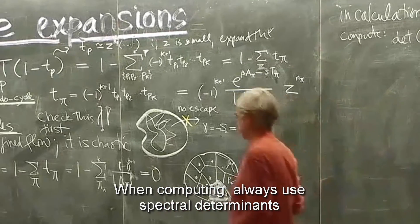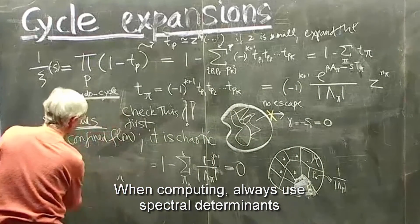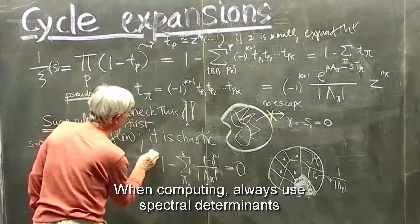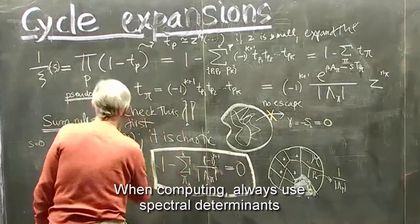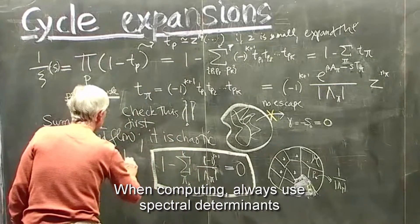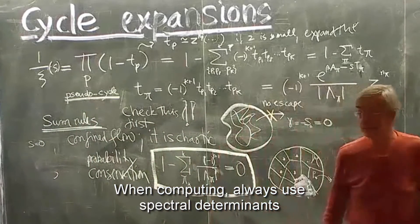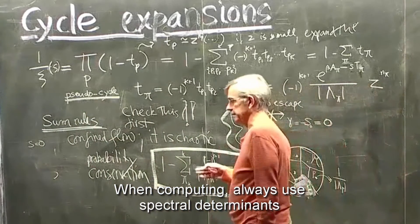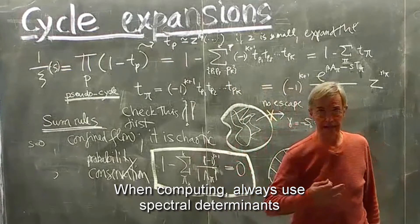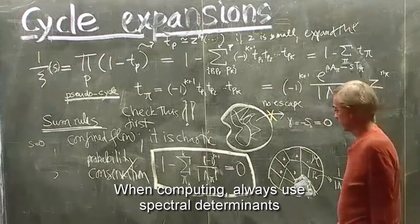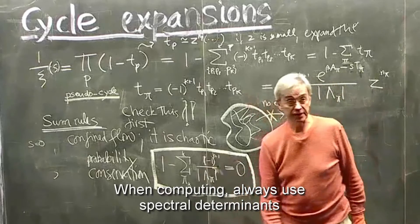But this is amazing, the idea that you have a sum rule like this. This is probability conservation. In deterministic chaos, there are no probabilities. Everything is computable. But the ergodic set is divided in neighborhoods. And a finite number of periodic points suffices to get an accurate calculation. This is the first check where you have them.